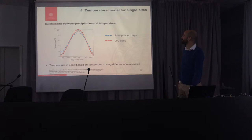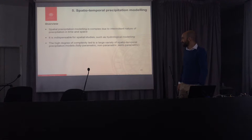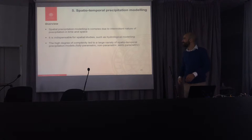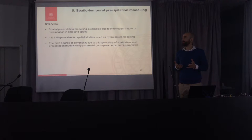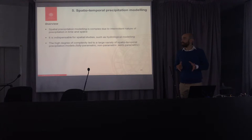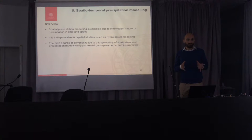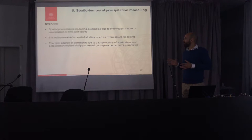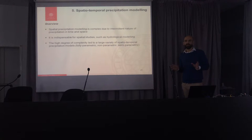Moving on to spatial modeling. The biggest issue is rainfall — it's a really complex, chaotic phenomenon, and the intermittent nature of rainfall in time and space makes things very complex. But you need it for any kind of spatial application, such as a catchment model. As it's a very complex topic, different authors have come up with many different approaches: fully parametric, non-parametric, and semi-parametric models.